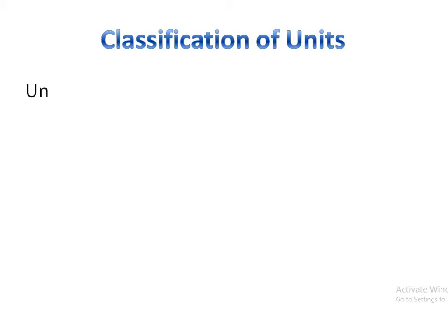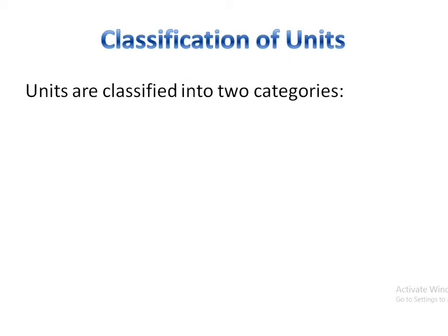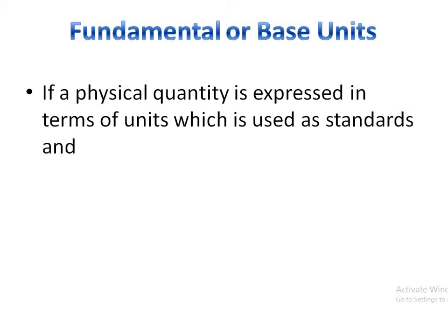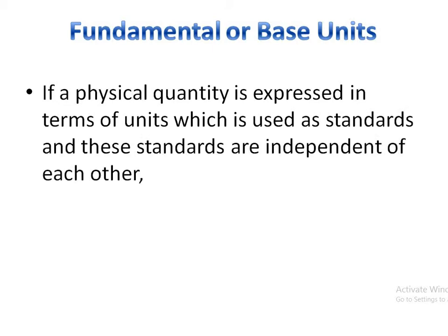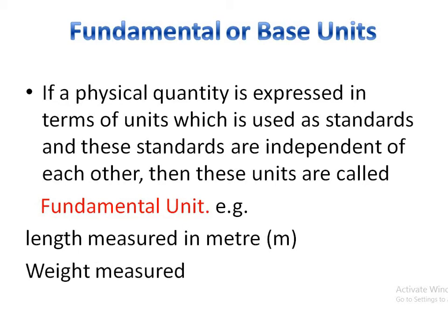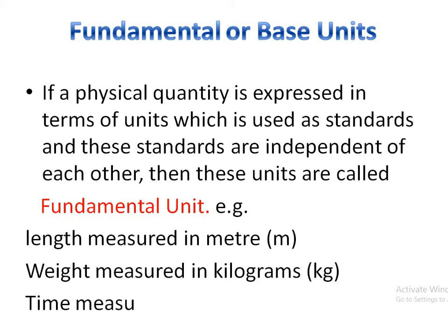Classification of units. Units are classified into two categories: fundamental or base units, and derived units. If a physical quantity is expressed in terms of units which are used as standards, and these standards are independent of each other, then these units are called fundamental units. For example, length is measured in meters, weight in kilograms, and time in seconds — these are examples of independent fundamental units.